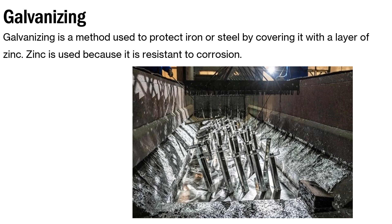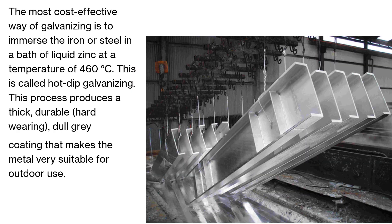Galvanizing is a method used to protect iron or steel by covering it with a layer of zinc. Zinc is used because it is resistant to corrosion. The most cost-effective way of galvanizing is to immerse the iron or steel in a bath of liquid zinc at a temperature of 460 degrees Celsius. This is called hot dip galvanizing. This process produces a thick, durable, hard-wearing, dull grey coating that makes the metal very suitable for outdoor use.